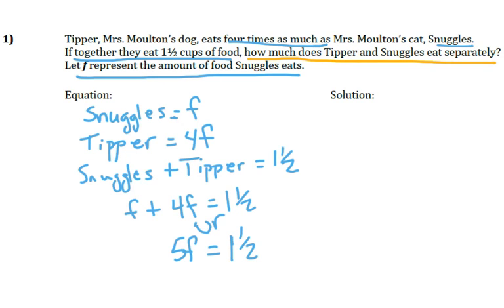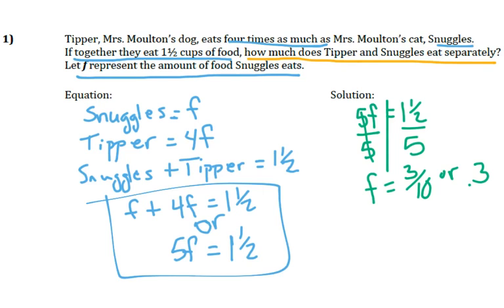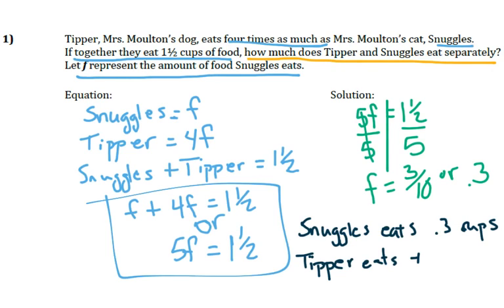Either of these would work for our equation, but now we need to solve. I'm going to take 5F equals one and one-half and solve that. I'm going to divide by 5 on both sides of our equation, doing the opposite. We get F is equal to three-tenths, or 0.3. Since F represents how much Snuggles eats, Snuggles eats 0.3 cups of food. We can also figure out what Tipper eats by multiplying 4 by 0.3, which results in 1.2 cups.